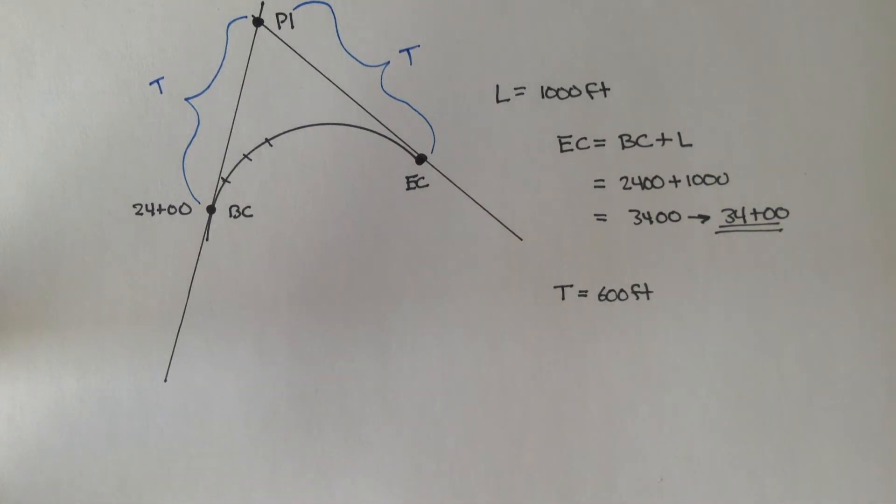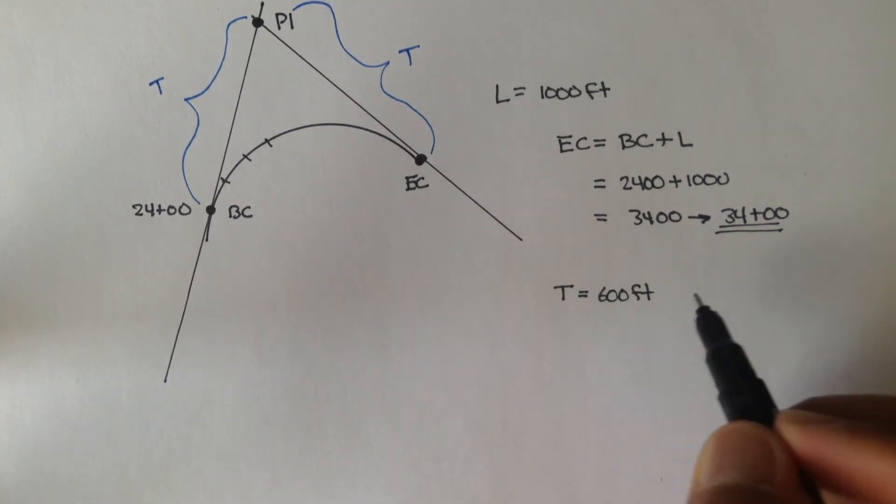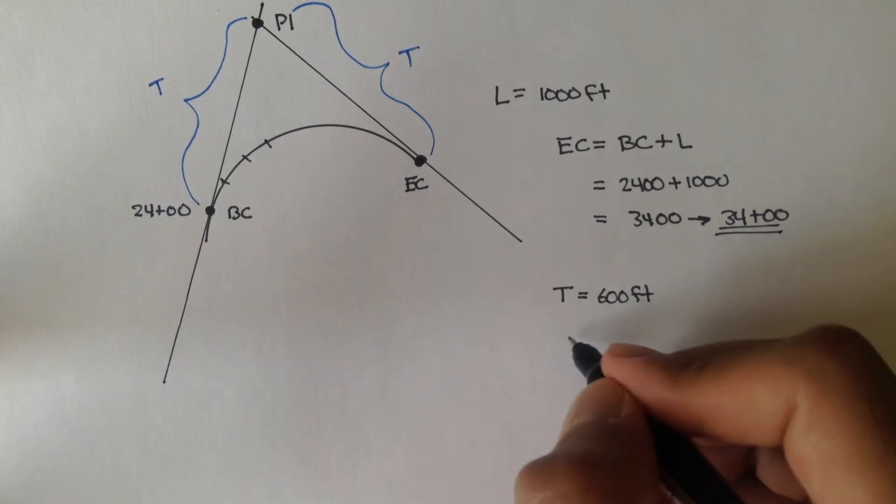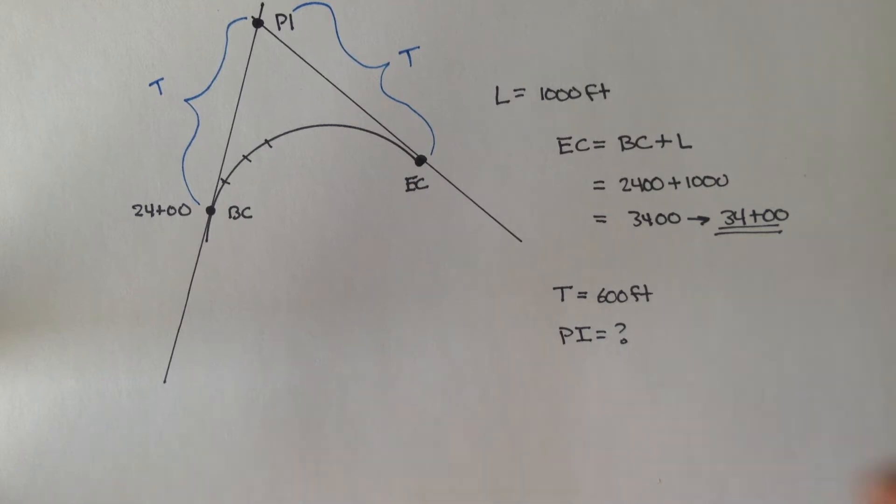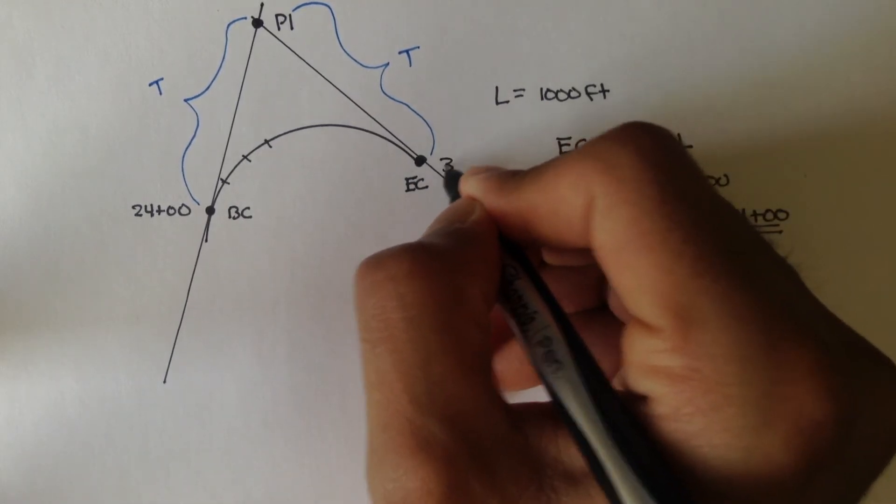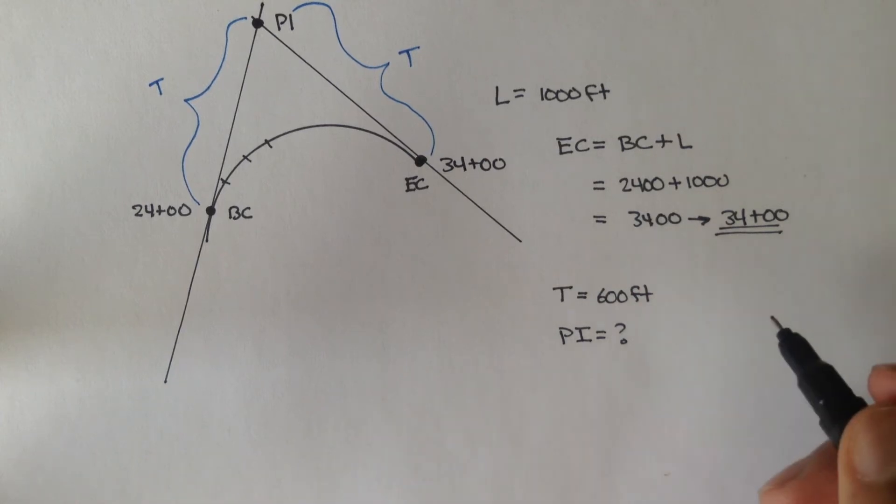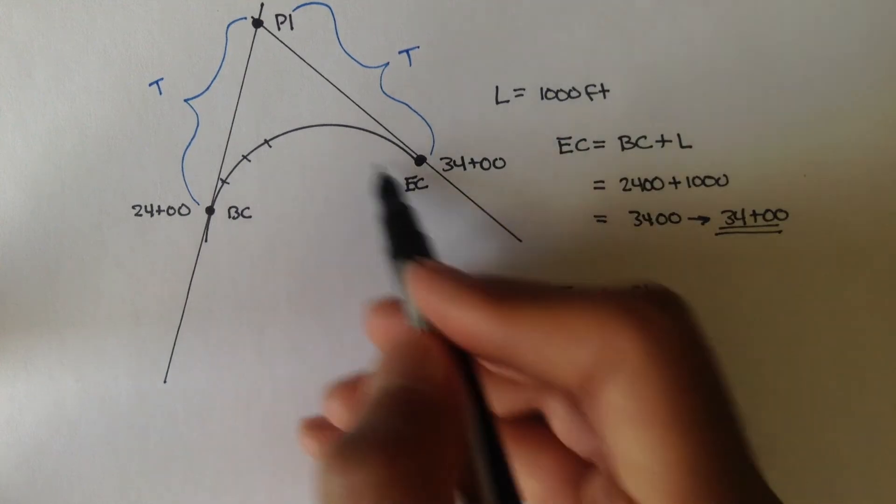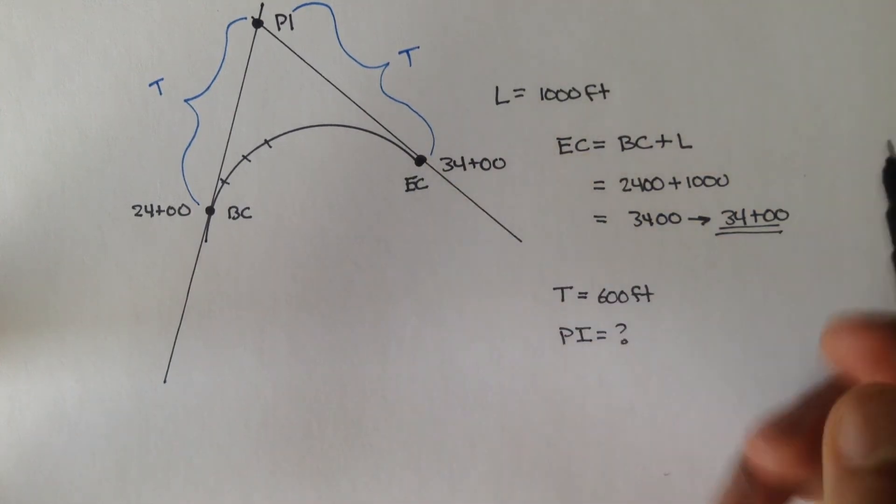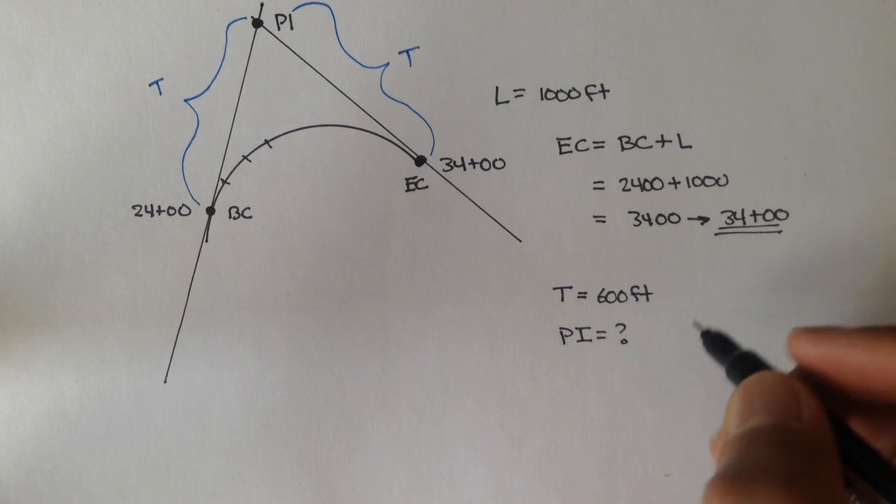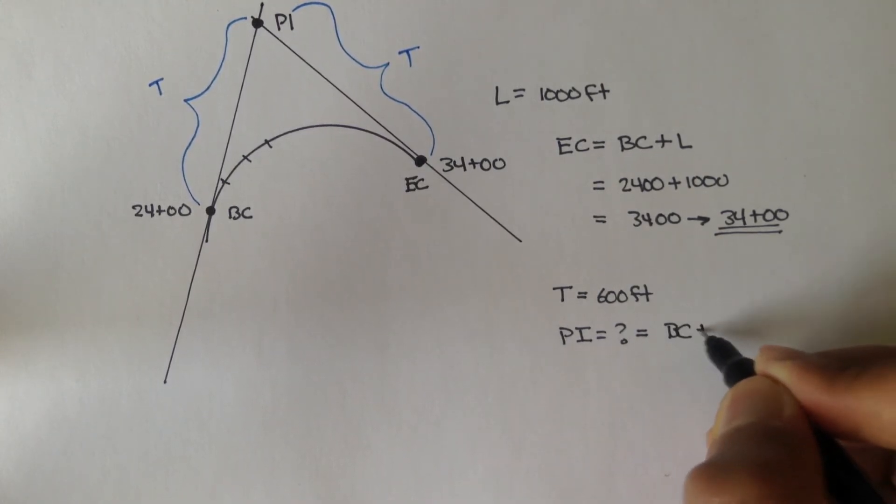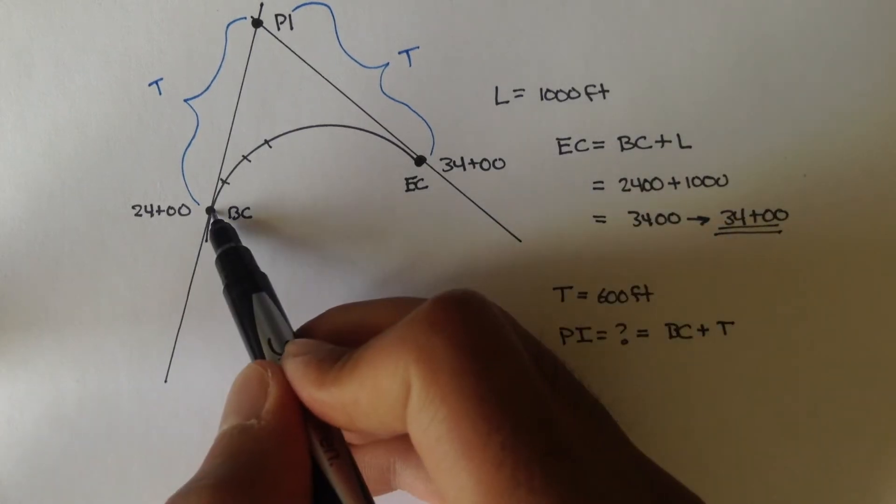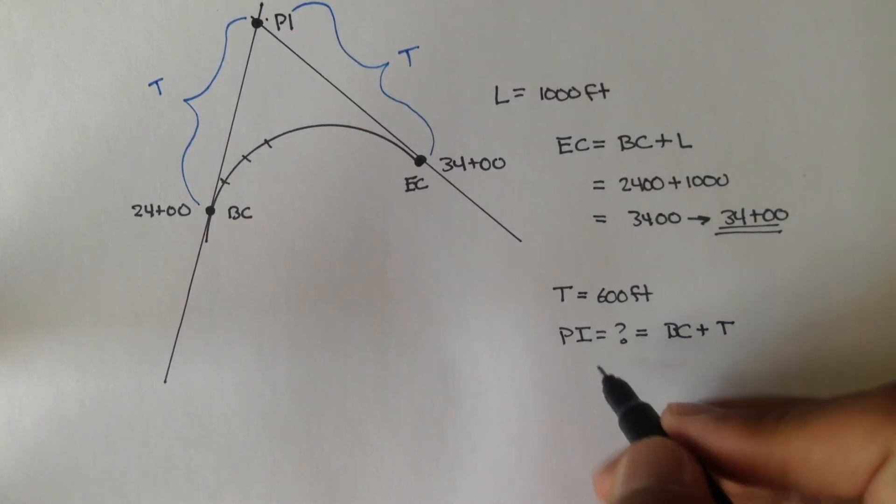And they give us, or they tell us that T is equal to 600, and we want to figure out what the PI is. What's PI? So, we kind of take the same concept into this problem, and we say that the PI is going to be equal to the beginning of curve plus T, right? If BC, you add T, you get PI.